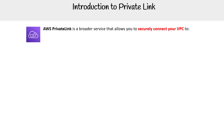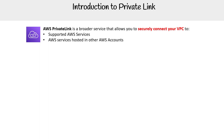Private Link is a broader service that allows you to securely connect your VPC to supported AWS services, services hosted in other AWS accounts, supported marketplace and partner services, without the need of an IGW, VPN, or an AWS Direct Connect connection. Now you can use something like a Direct Connect in combination with Private Link, but you don't have to have one.